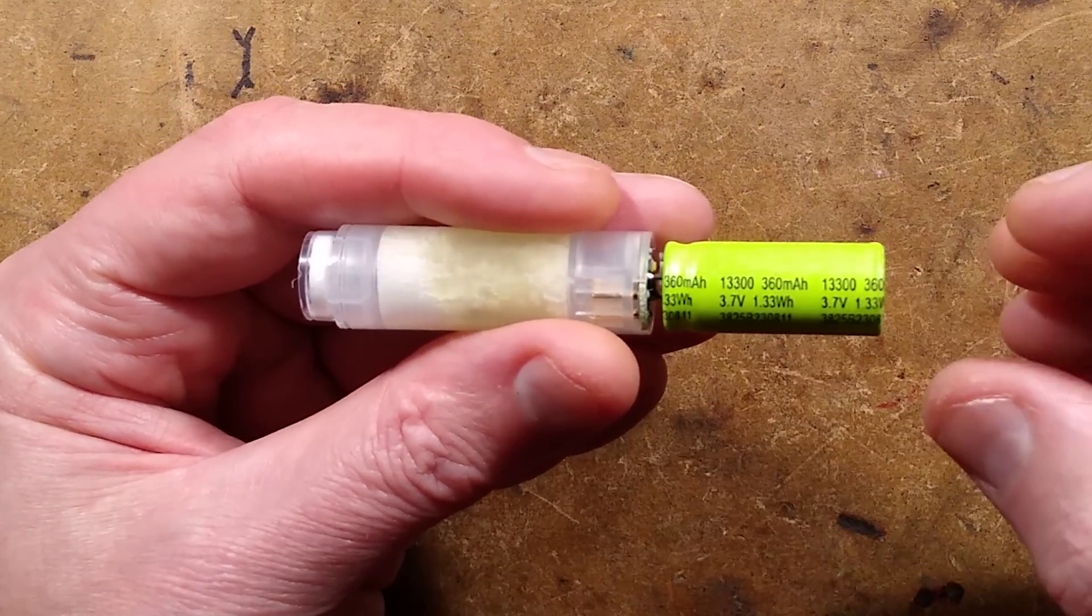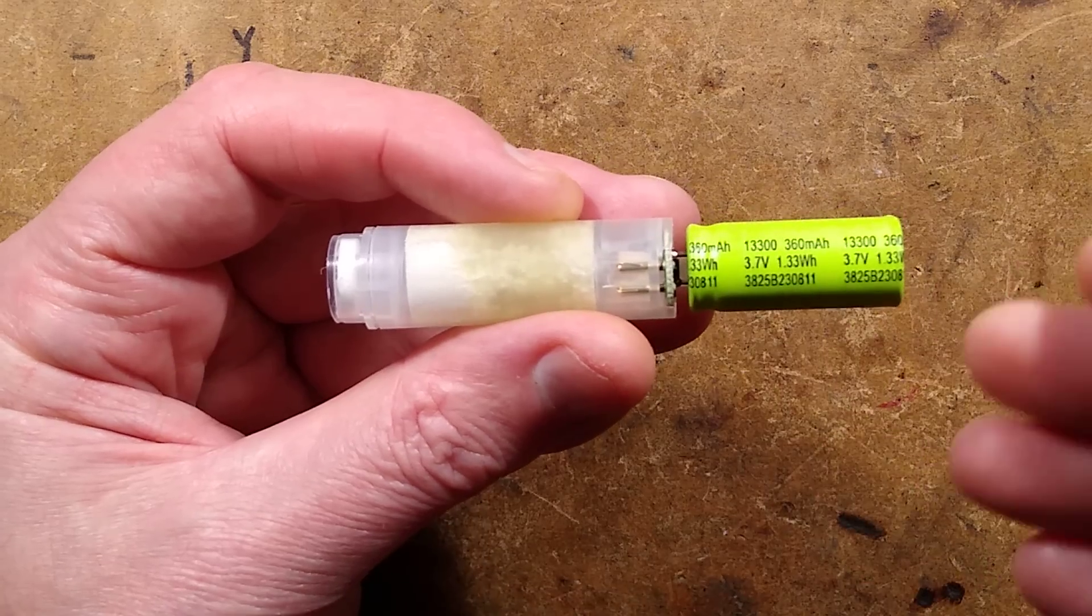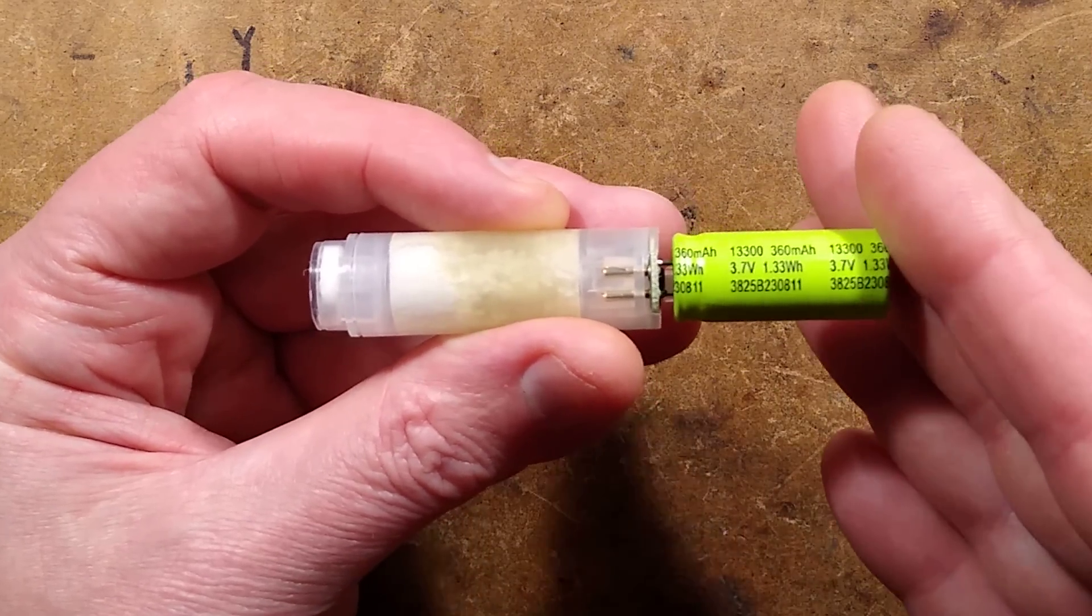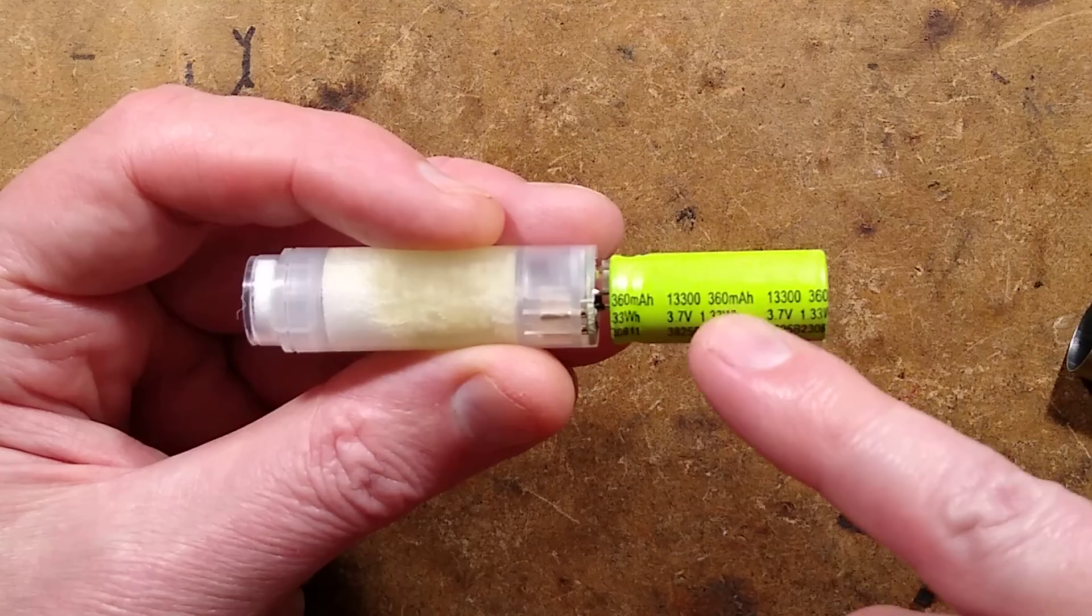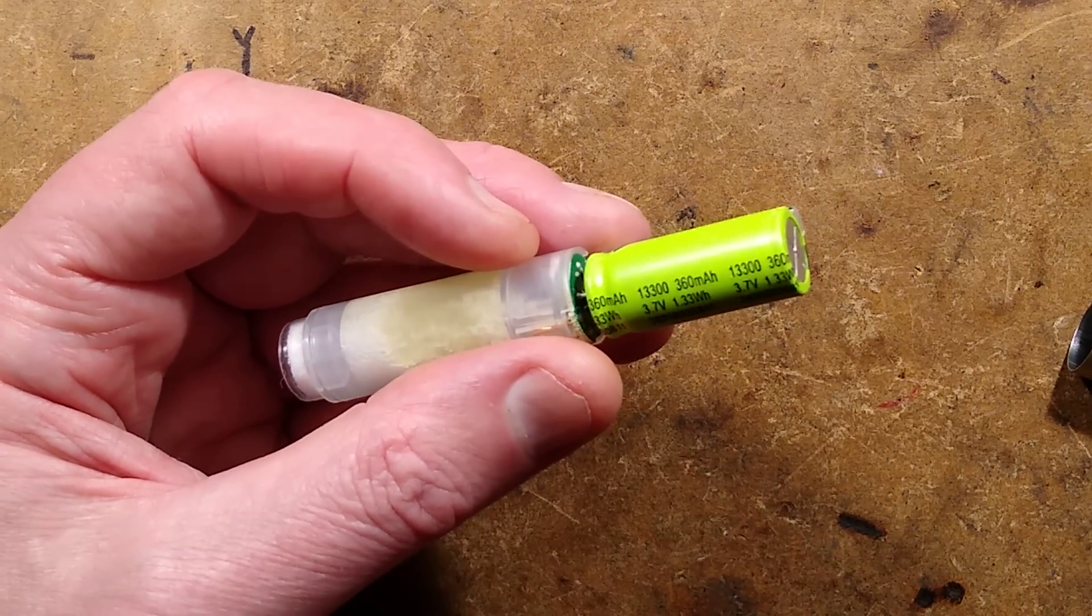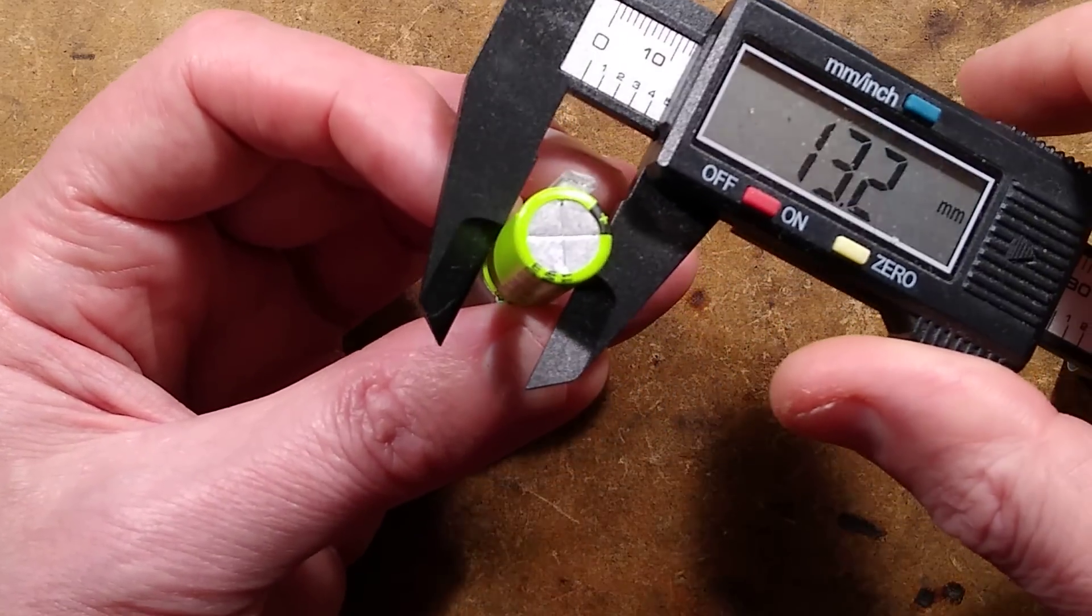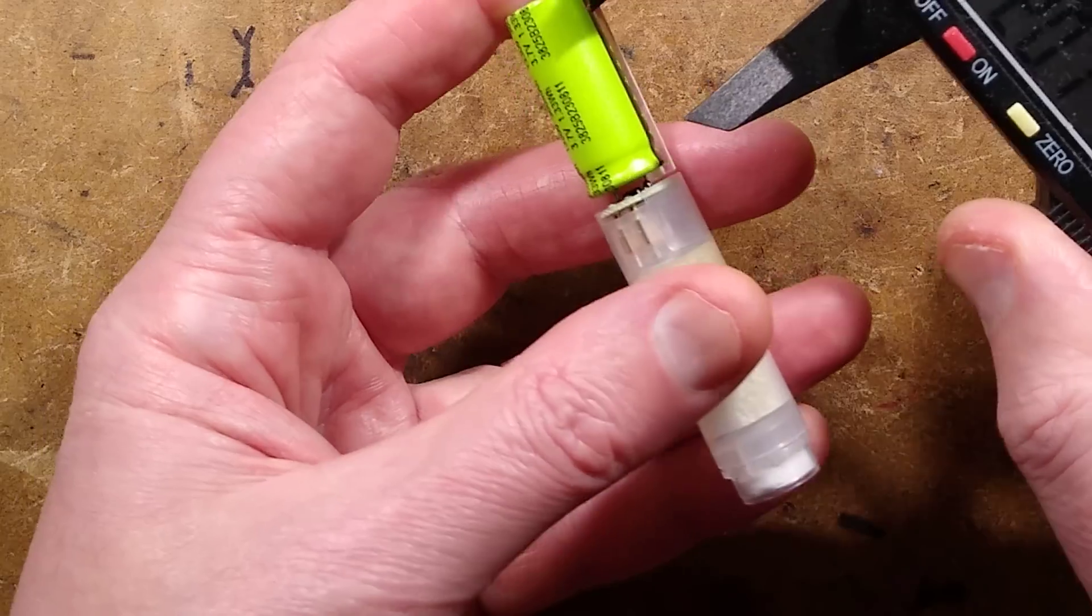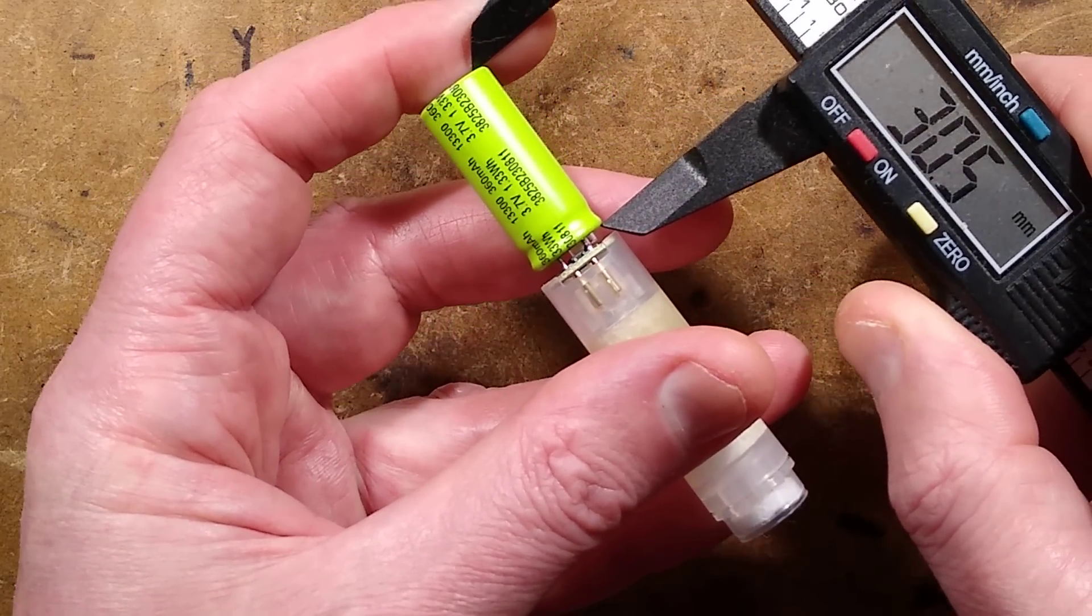A super capacitor would not be suitable for applications like this because they have a very high rate of self-discharge and not good energy density. This one is marked 13300, which I presume is 13 millimeters diameter. There's your 13 and 300, 30 millimeters long.